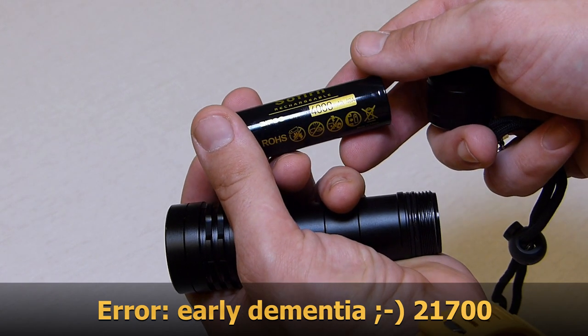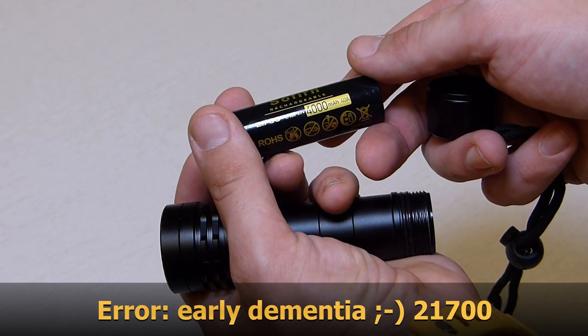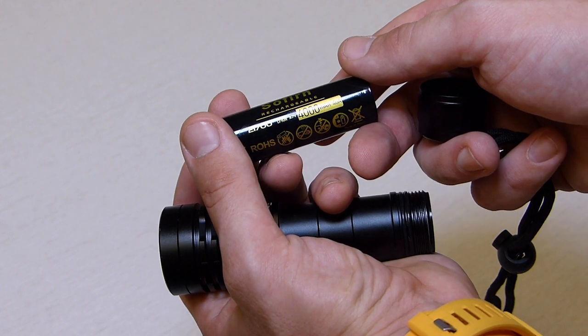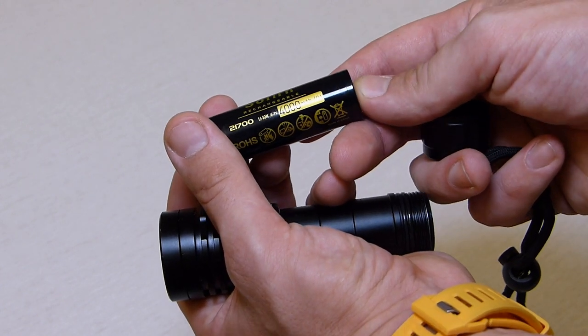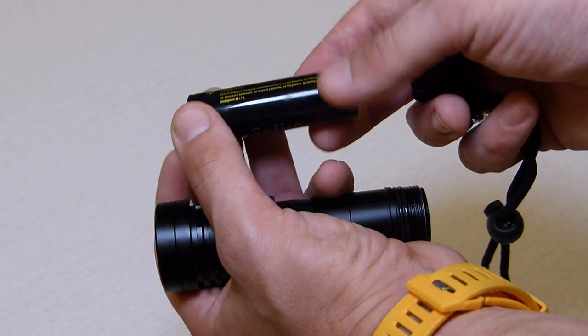Compared to the 18650s, the 21700 has a little bit more punch, a little bit more capacity, same voltage though.